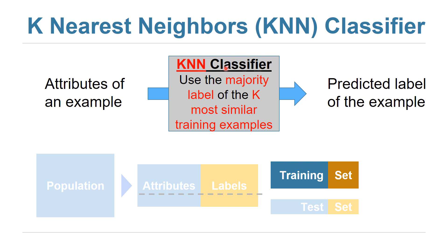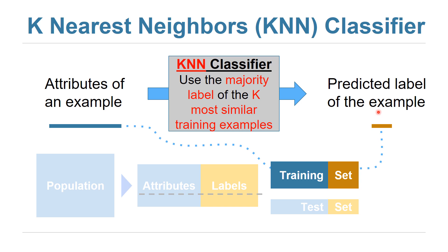Generally, the KNN or K-Nearest Neighbor classifier uses the majority label of the K most similar training examples in the training set. Given an example, we find the K most similar training examples, look for the majority vote among them — the class that has the majority votes — and that will be the label we predict for the given example.